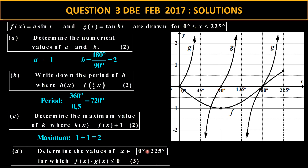Determine the values of x between 0 and 225 where the product is less than or equal to zero — that means positive times negative or negative times positive. You can see a positive with a negative between 0 and 45, giving one answer. Then between 90 and 135 there is also a positive with a negative. The answer is between 0 and 45 and between 90 and 135. Because of the asymptote, I must exclude the asymptote value, so I write 0 to 45 and 90 to 135 with appropriate notation.